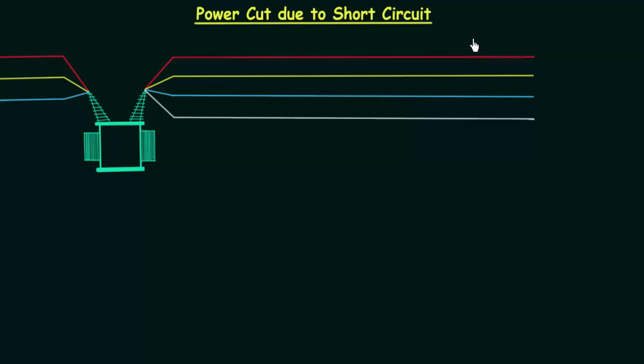In the previous lecture we saw the working of AC power supply system and now in this lecture we will understand why there is power cut when there is short circuit.